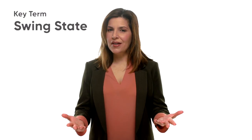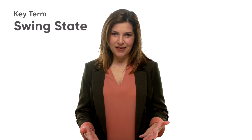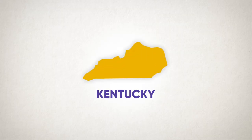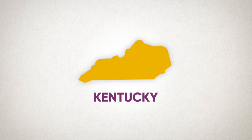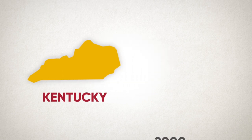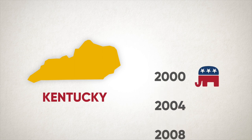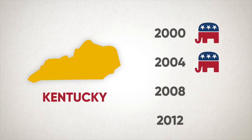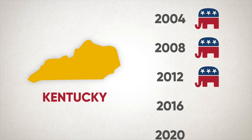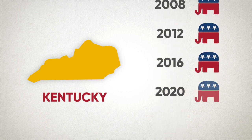A second concern with winner-take-all is that it gives disproportionate influence to swing states. To understand swing states, you have to understand what is not a swing state. In every election cycle, there are some states where it's easy to predict which presidential candidate is going to win right from the start. Consider Kentucky — based on historical trends, a Republican candidate starts knowing they will win Kentucky, and a Democratic candidate knows they will almost certainly lose.